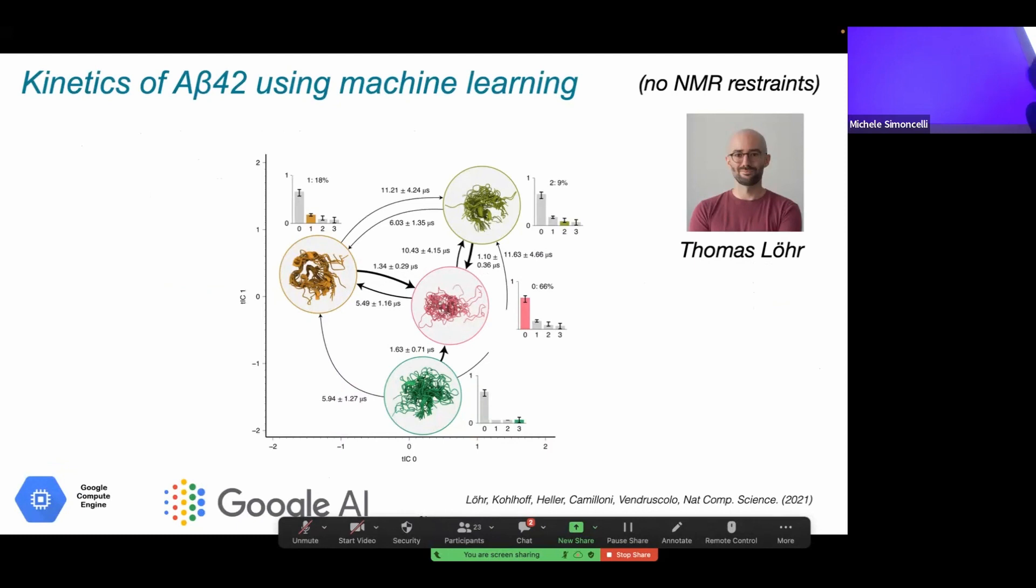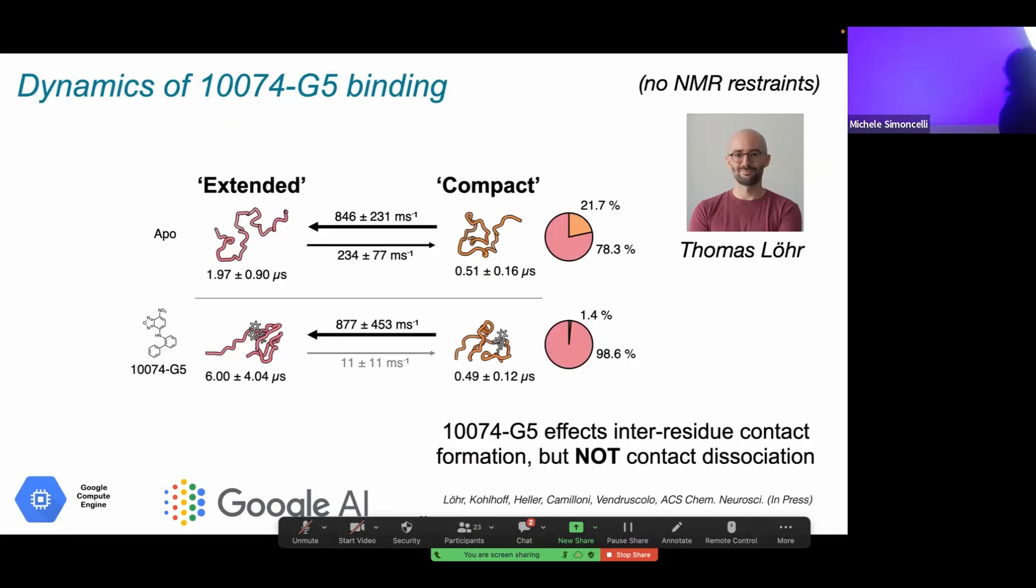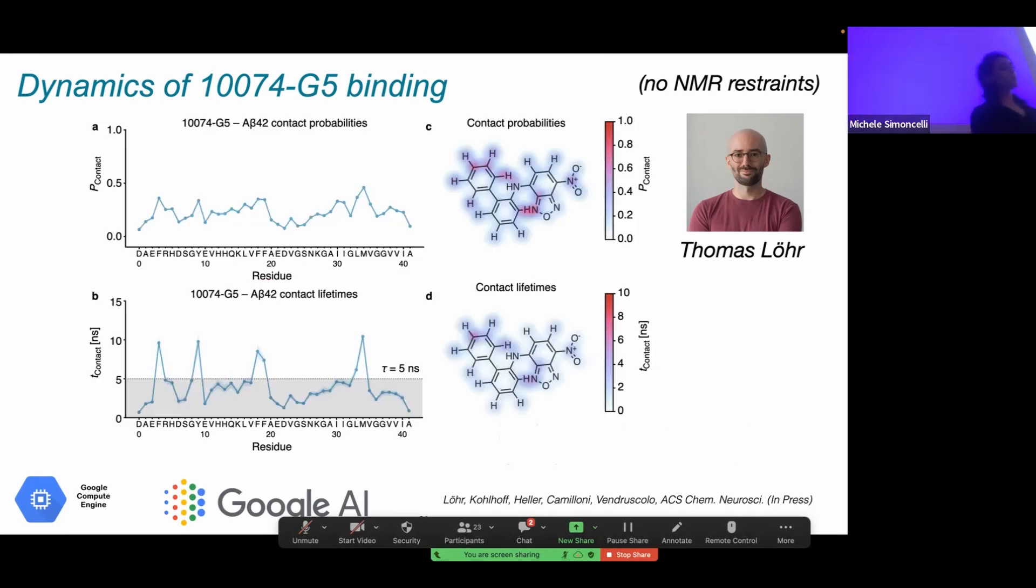Essentially, each frame of our MD has a probability of being assigned to a certain state, which allowed us to build this Markov state model. We can pick how many different states we want. This can be broken down anywhere from two to however many states that you would like. This is particularly useful in the context of small molecule binding. What we learn from this analysis is that this small molecule seems to affect inter-residue contact formation, but not contact dissociation. Additionally, from this analysis, we can learn about contact lifetimes and contact probabilities projected onto the small molecule. What's very nice about this approach is that we can correlate regions which we see are particularly important for binding the disordered peptide and perform a quantitative structure activity relationship study on this in aggregation assays. And we find that these are the exact regions that we find we cannot remove.